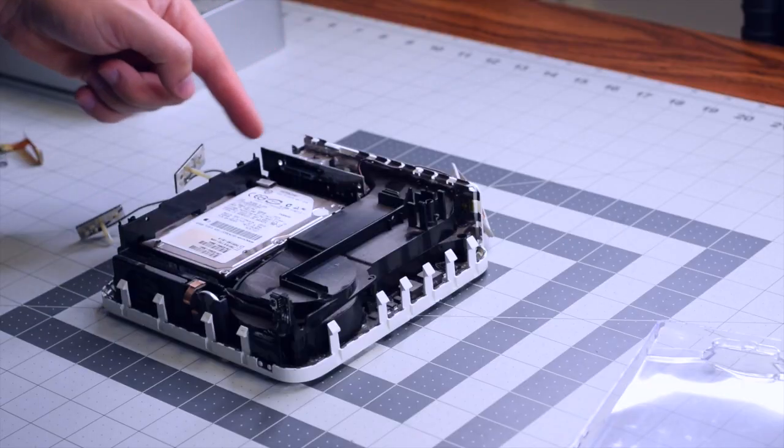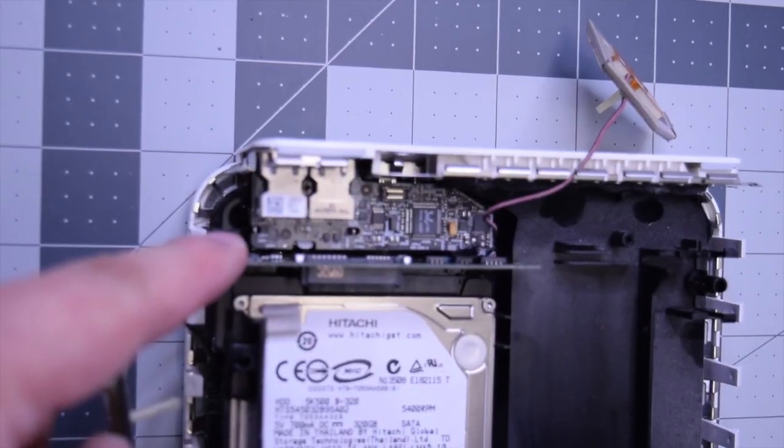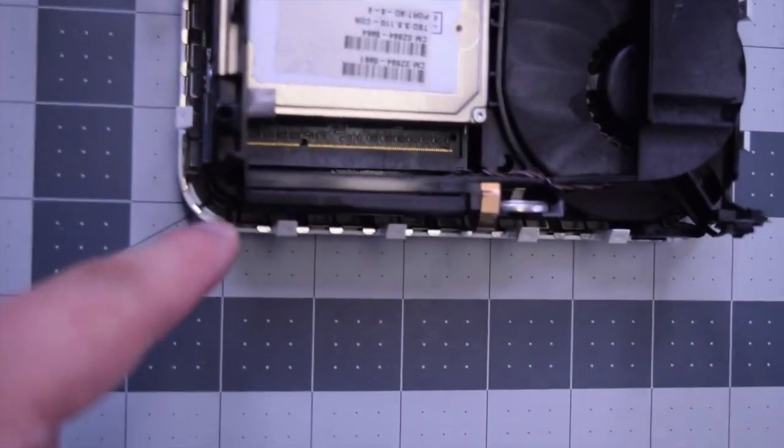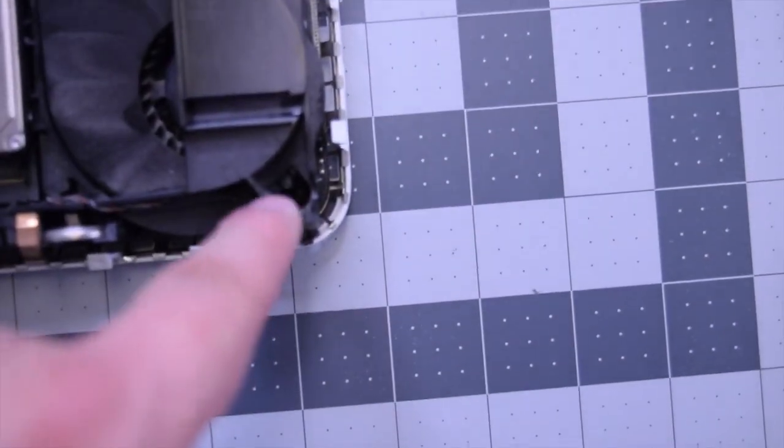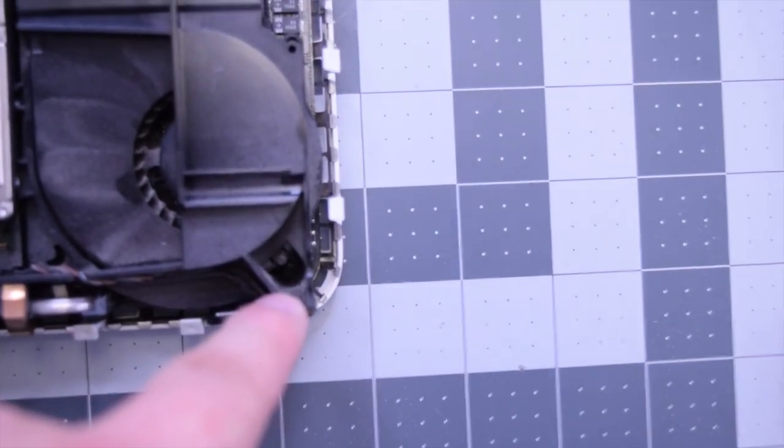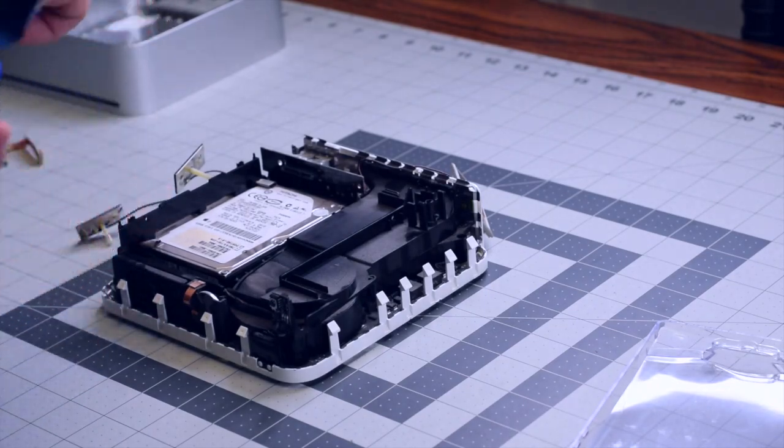That should be able to come out, slide out just like that. With the DVD drive removed, we need to remove the hard drive bracket enclosure. It's being held in with four Phillips head screws. You should need an adapter for this. A standard reach Phillips head screwdriver should be able to get those. Go ahead and remove those four Phillips head screws as shown.